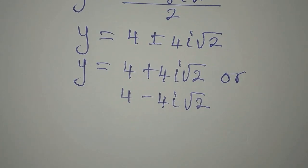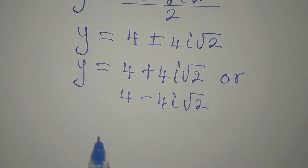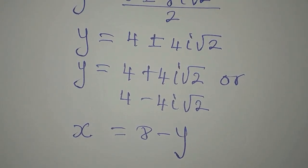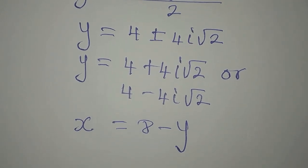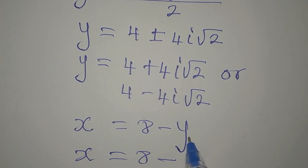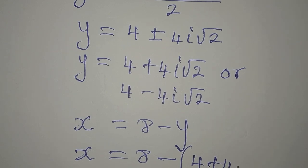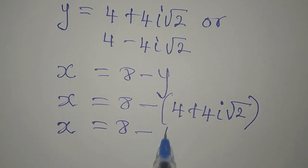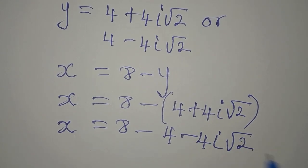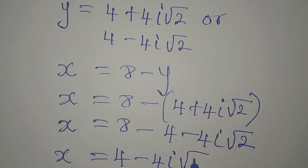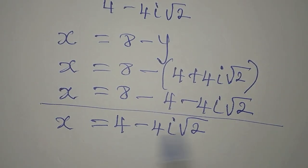Now we had our equation 3: x equals 8 minus y. Now that we know the values of y, let's substitute them in. So x will now be 8 minus the first value of y, which is (4 plus 4i root 2). This gives x equals 8 minus 4 minus 4i root 2, so x equals 4 minus 4i root 2.